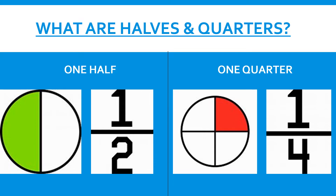A quarter is when something is split into four equal parts — one over four. Here the circle is split into four, and one quarter of the circle is coloured in red.